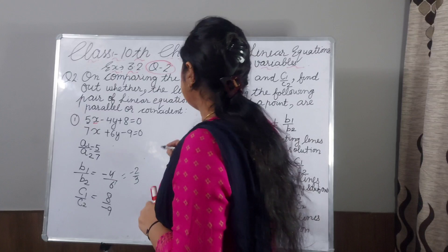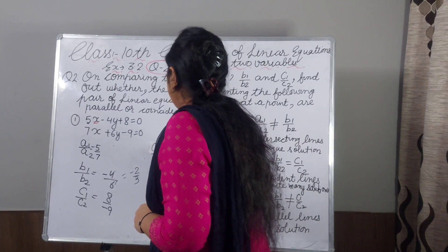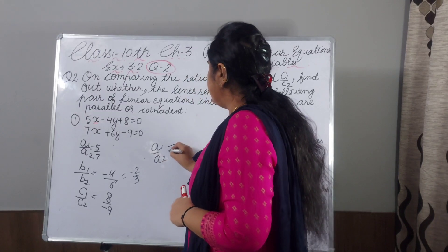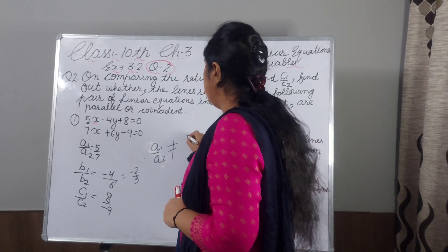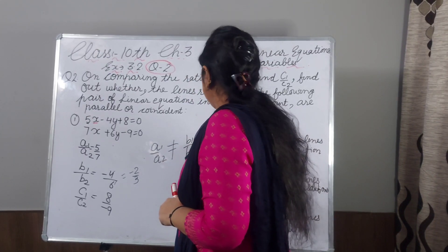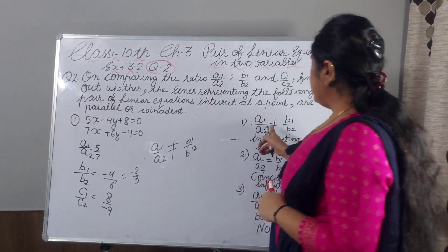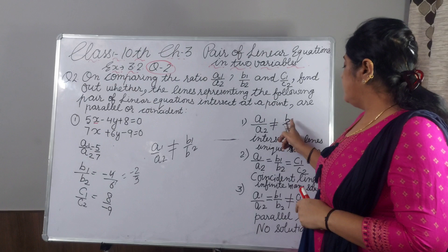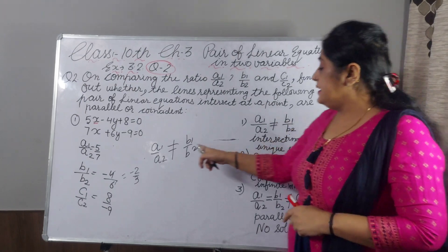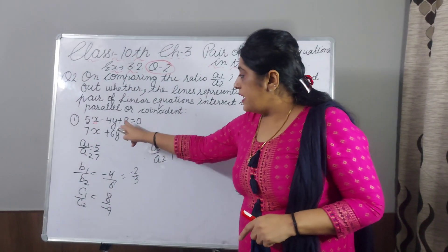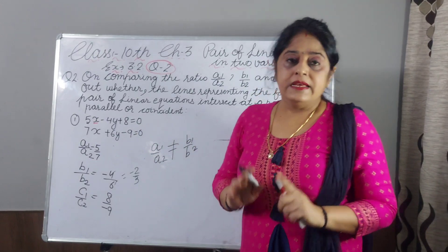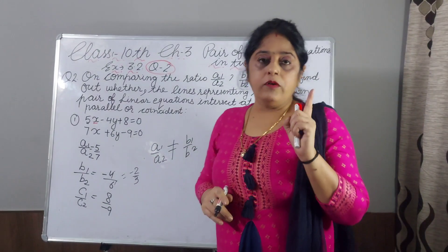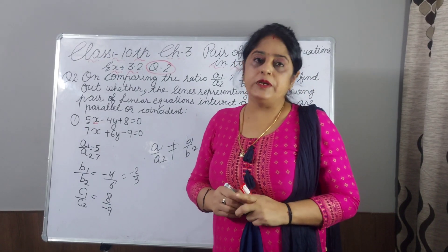Now you compare. Here, A1 by A2 is 5 by 7, which is not equal to B1 by B2. And I have told you, if A1 by A2 is not equal to B1 by B2, these are intersecting lines. When you draw the graph of these two lines, they will intersect each other. And we will get only one solution, means unique solution.